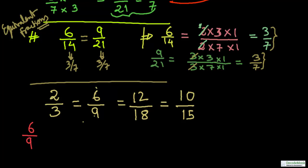Let me do it the faster way. For 6 upon 9, find the common factor between the two. 6 comes in the table of 3: 3 twos are 6. 9 also comes in the table of 3: 3 threes are 9. Cancelling the common factor 3, we are left with 2 upon 3. So we have arrived at 2 upon 3 by starting with 6 upon 9.